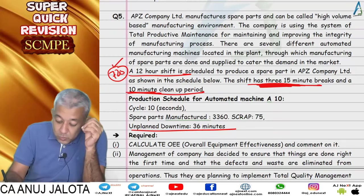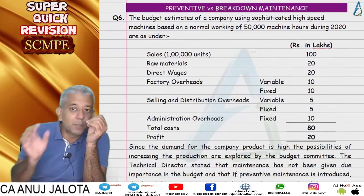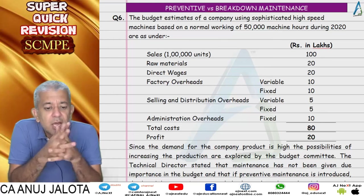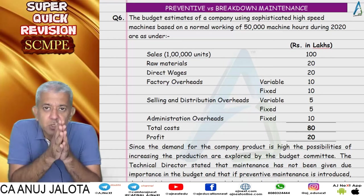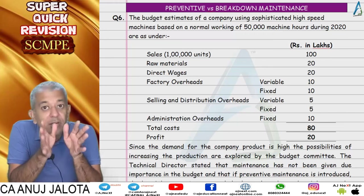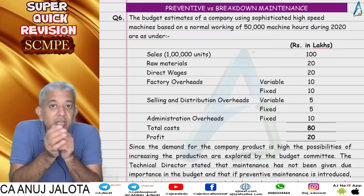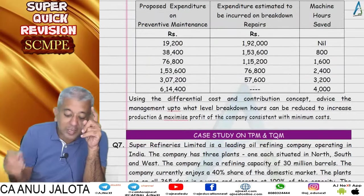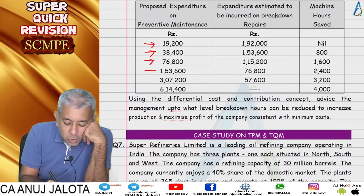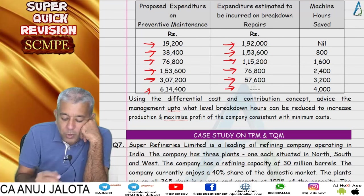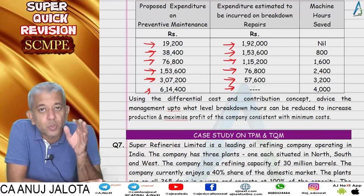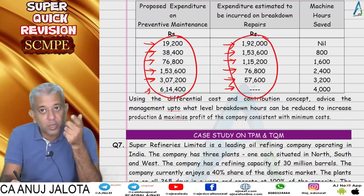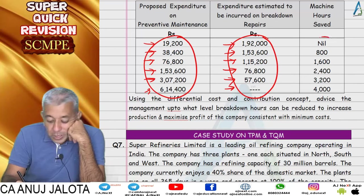Question 6 is about a company with many breakdowns considering spending more on preventive maintenance — servicing and greasing machines at frequent intervals to avoid breakdowns. Savings come from reduced breakdowns: fewer wasted hours mean more production, more sales, and more contribution. The question asks for the best level of preventive maintenance expenditure. A table shows that as preventive maintenance spending increases, breakdown maintenance expenditure falls.